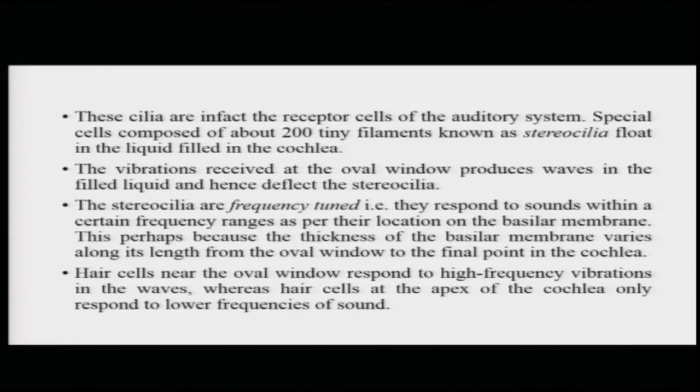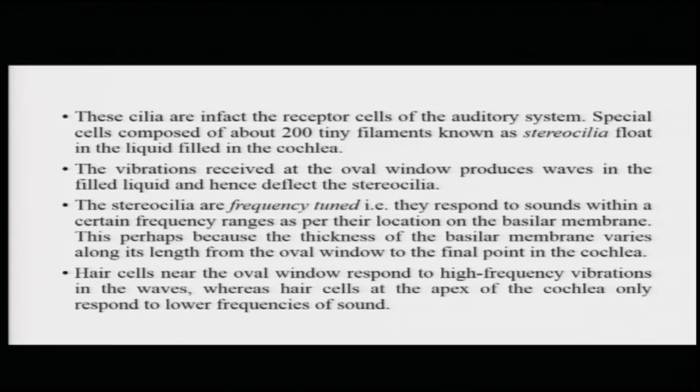The cochlea contains tiny hair cells called cilia lining the inner surface along the basilar membrane. The cilia are the actual receptor cells in the auditory system — special cells composed of 200 tiny filaments known as stereocilia floating inside the liquid-filled cochlea. The vibrations at the oval window produce waves in this liquid, causing deflection of these stereocilia. The stereocilia are frequency-tuned, meaning they respond to sounds within a particular range of frequency depending on their location in the basilar membrane, because the thickness of the basilar membrane varies from the oval window to the apex of the cochlea.